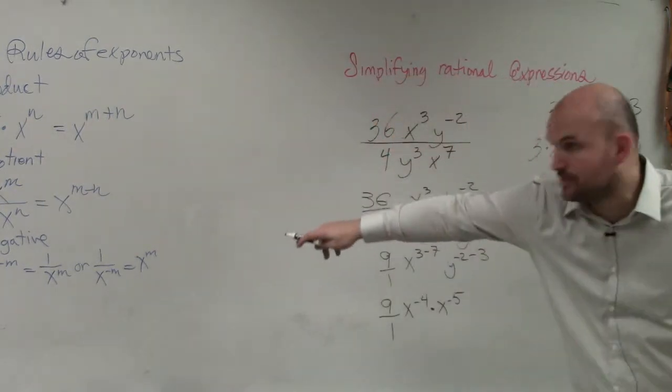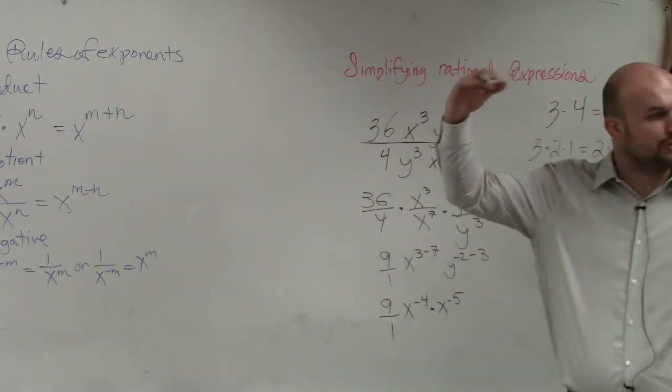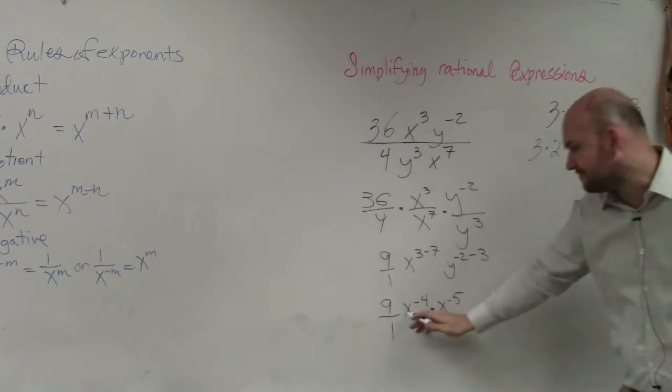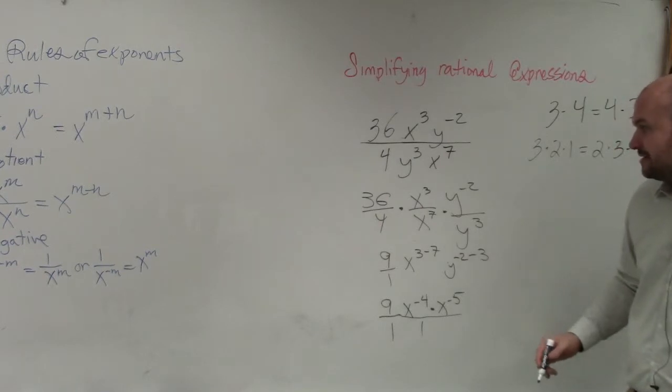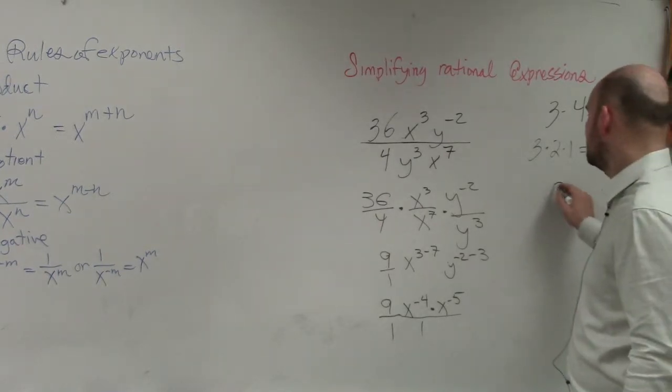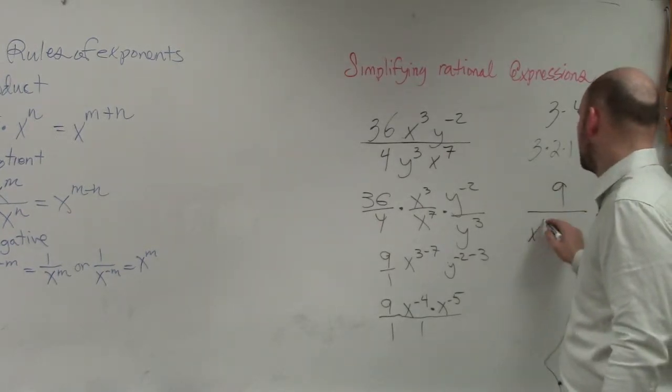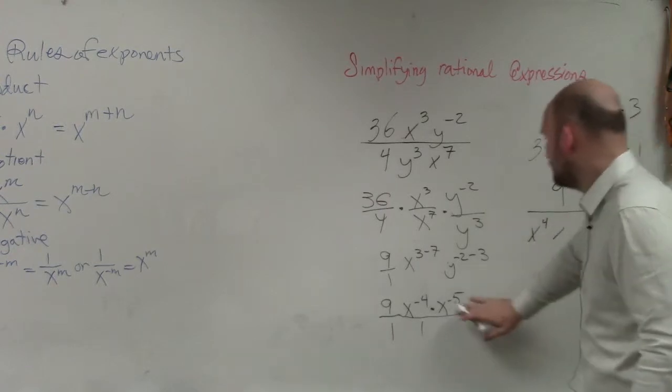Now, using our negative rules of exponents, where should those powers be? In the numerator or the denominator? Right now, they're in the numerator. So to make them positive, I have to rewrite them in the denominator. I have a question. Wait. You meant y and x. Wait. Oh, yeah. It's a y. Thank you.